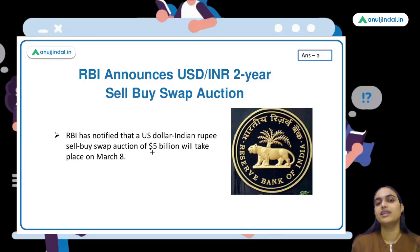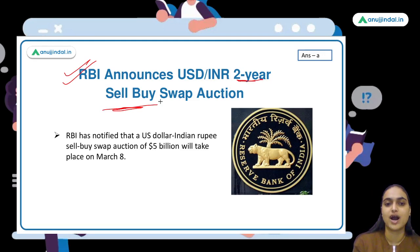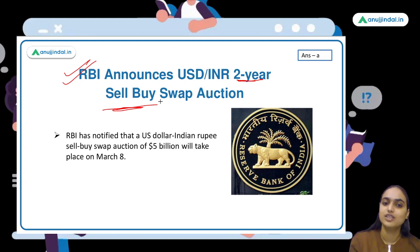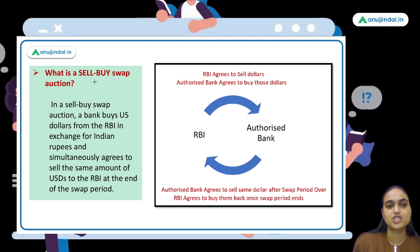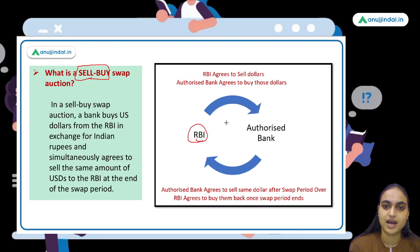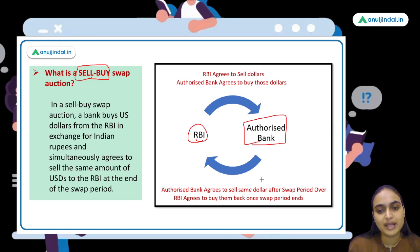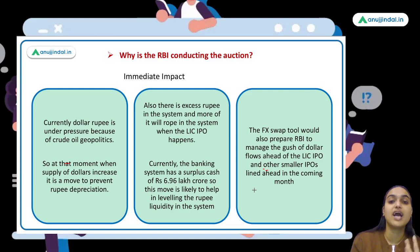I'm discussing this because RBI has recently notified that it is going to conduct a two-year sell-buy swap auction. On March 8th, RBI will sell five billion dollars' worth of dollars to banks in exchange for rupees, with an agreement that after two years it will do the reverse. In a sell-buy swap, the central bank sells dollars to authorized banks, who then agree to sell the same dollars back once the swap period is over.